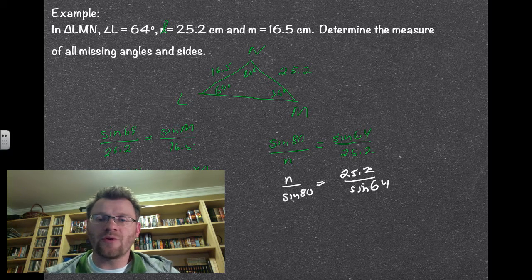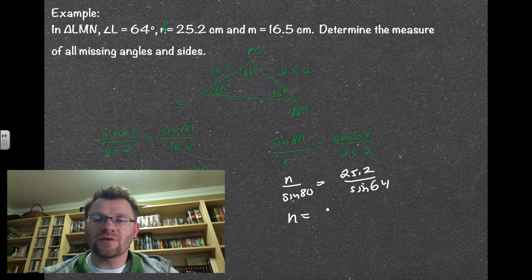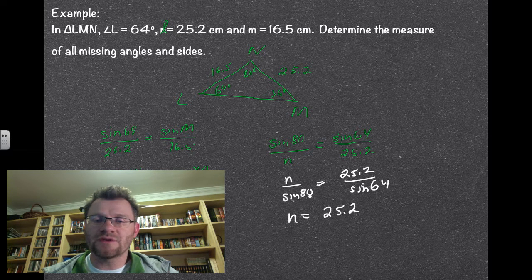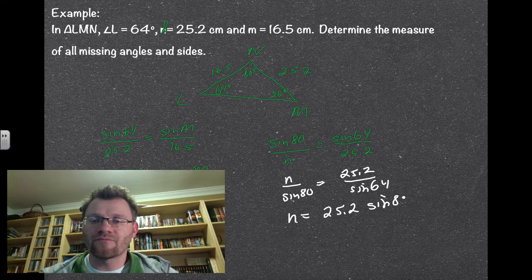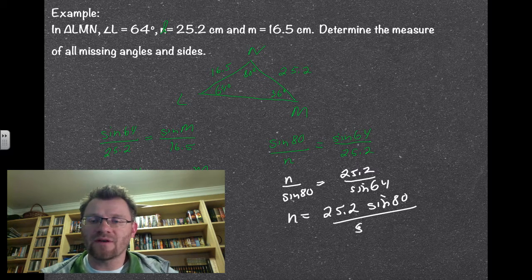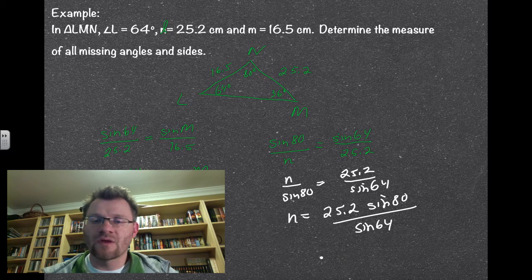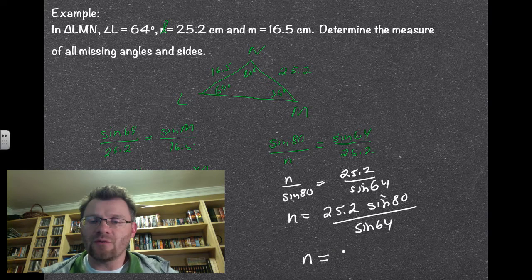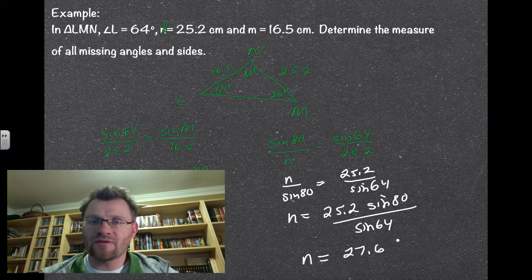Just flip both sides of this equation. Make sure you flip both of them though, not just one side. So that means n equals 25.2 times sine 80 divided by sine 64, which gives me a final answer of n equaling 27.6 centimeters.